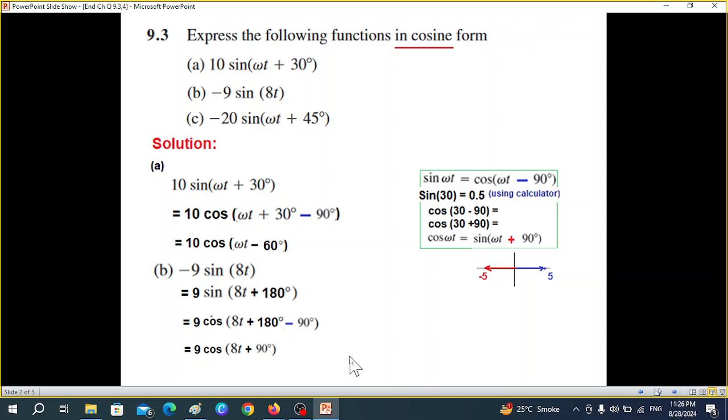You might ask, what if I subtract instead of adding 180 degrees? Let's see. Subtracting 180 degrees, we move into the positive side from negative to positive. And now for cosine, we'll again use the same formula, subtract minus 90 from here, and the value will be minus 270.